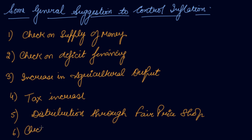Number six is check on hoarding, which means producers should not hold stock or engage in black marketing to reduce supply and drive up prices. The government should check hoarding to ensure producers are not blocking goods but are instead supplying them into the economy.